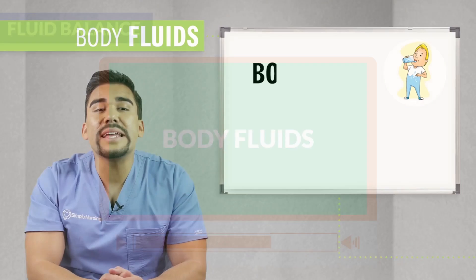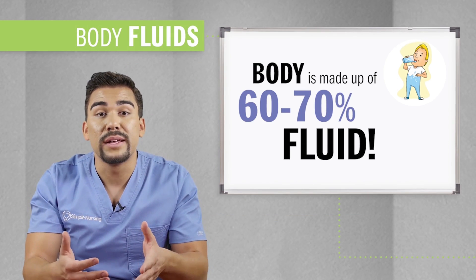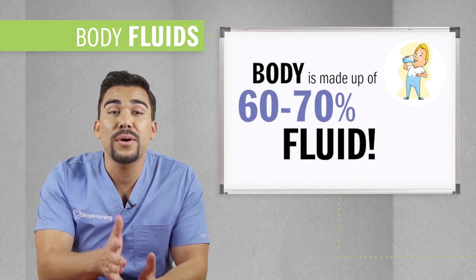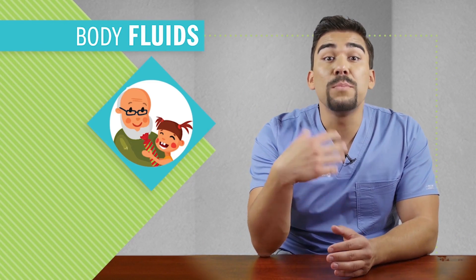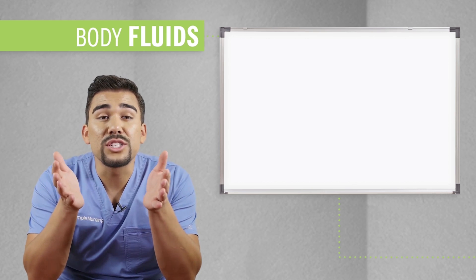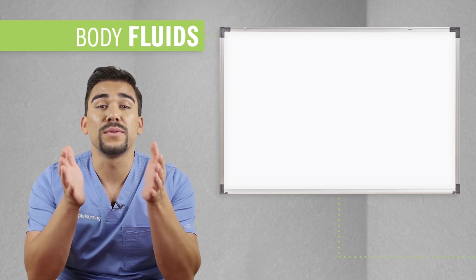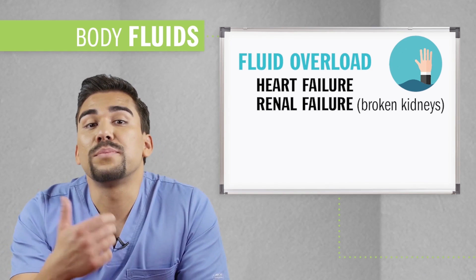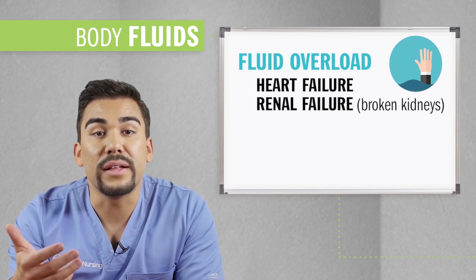The human body is made up of 60 to 70% fluid. As you grow older, H2O gradually decreases from birth to old age, usually because of muscle mass, which holds water and gradually decreases with age. This is why our infants and elderly patients are most at risk for fluid imbalances. Our elderly populations are most at risk for fluid volume overload due to heart failure or renal failure, or dehydration from not drinking enough water.